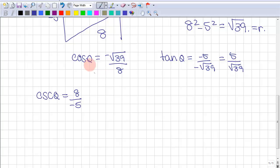So sec theta will equal negative 8 over root 39. So as you can see, this is the reciprocal of cos.